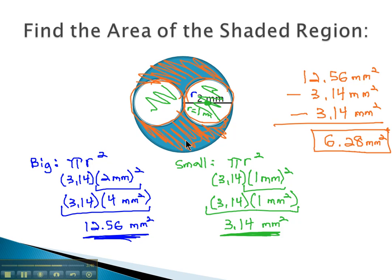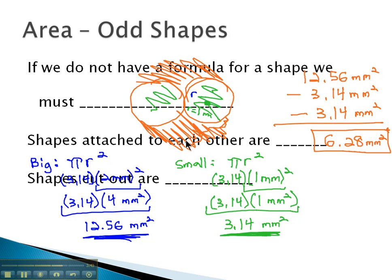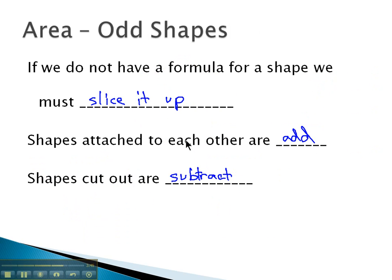So if we have an odd shape, we don't have a formula for it, we simply have to slice it up into pieces to find the areas. We can then find those individual pieces that we do have formulas for. And if they're attached to each other, we'll add the parts that are attached. If a shape is cut out, we'll subtract the part that is cut out to get our final area.